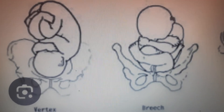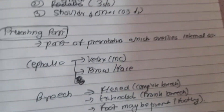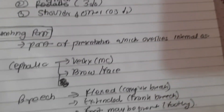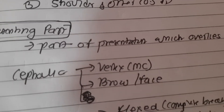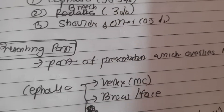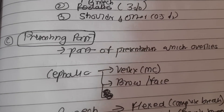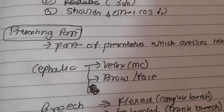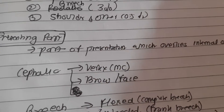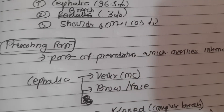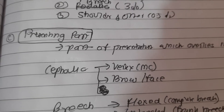The 'presenting part' is defined as the part of the presentation which overlies the internal os and is felt by the examining finger through the cervical opening. In cephalic presentation, the presenting part may be vertex — the most common — brow, or face, depending upon the degree of flexion of the head.